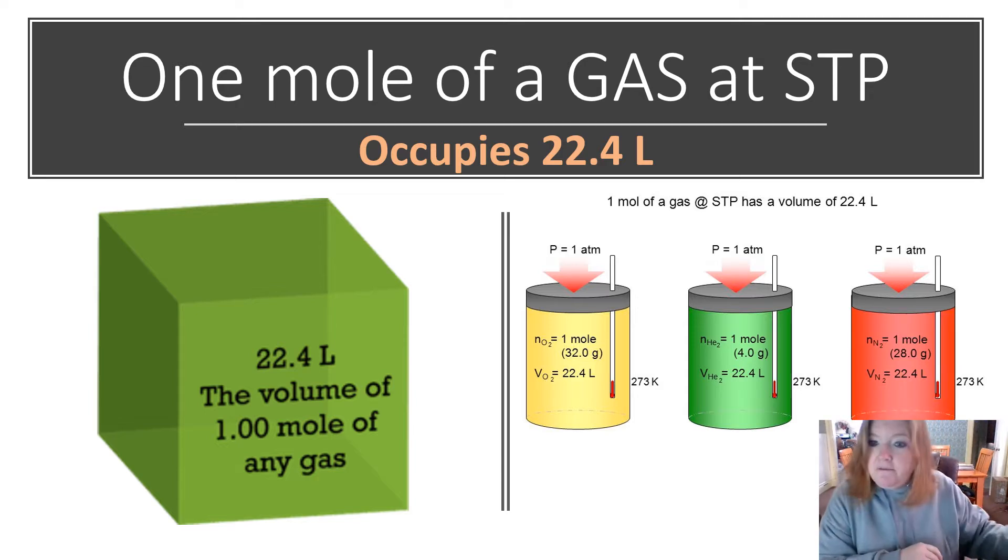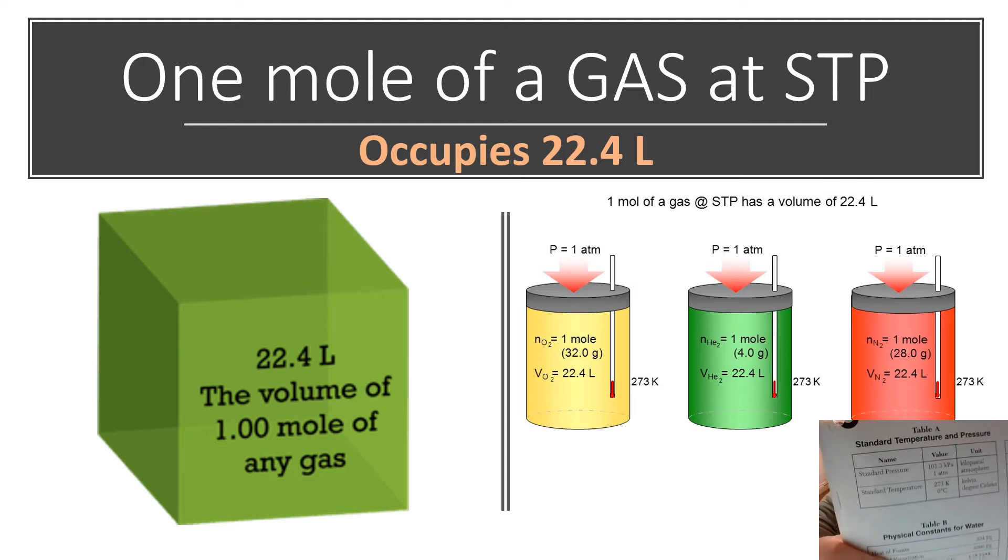And standard pressure one atmosphere or 101.3 kPa. You don't have to memorize it, it's in table A. Standard temperature and pressure. But anyway, one mole of the gas at STP is exactly 22.4 liters.